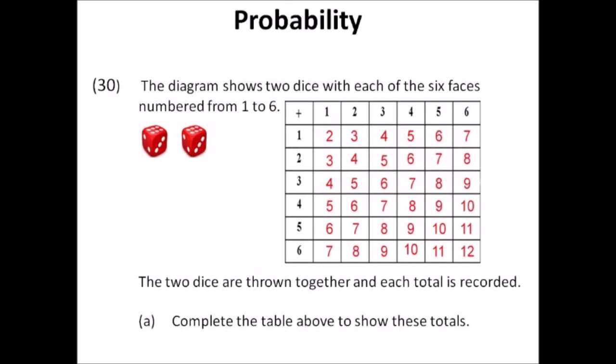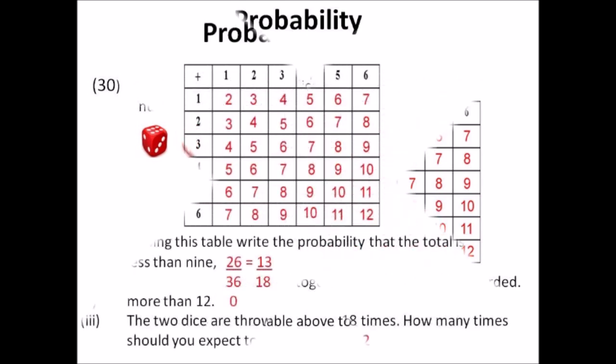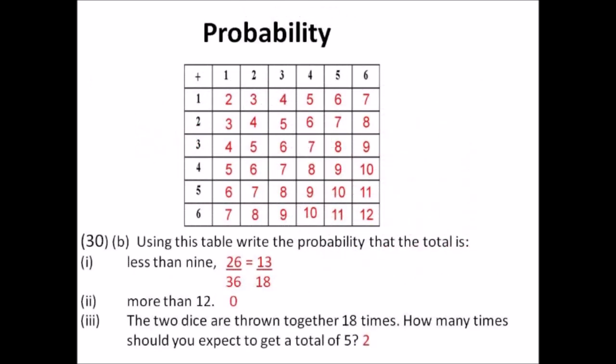Number thirty: probability. Fill in the table by adding — 1+1, 1+2, up to 6+6. The maximum total is 12. For part b: 1) the probability the total is less than 9 is 26 over 36, which simplifies to 13 over 18; 2) the probability the total is more than 12 is zero — impossible with two dice; 3) there are 4 ways to get a total of 5 out of 36 throws, so in 18 throws you should expect to get 5 twice.